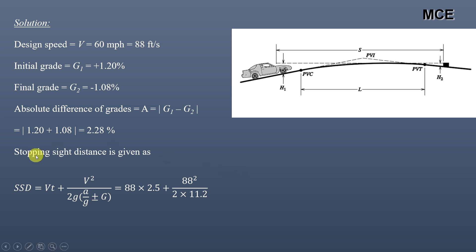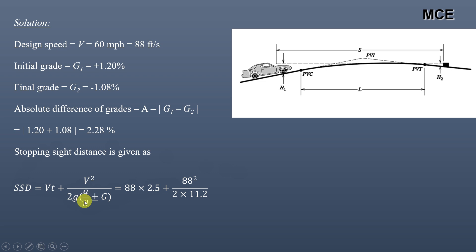The stopping sight distance formula according to AASHTO is: SSD = V·T + V² / (2g · (a/g ± G)), where V is the design speed (88 ft/s), T is the perception-reaction time (2.5 seconds per AASHTO), g is acceleration due to gravity (32.2 ft/s²), a is the deceleration rate (11.2 ft/s²), and G is the road grade. Since our road is level, G equals zero, so the small g terms cancel, leaving just 2a in the denominator.